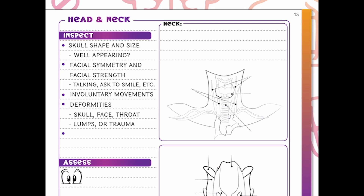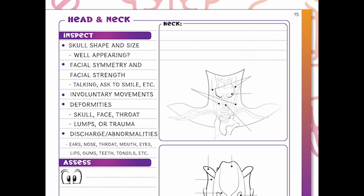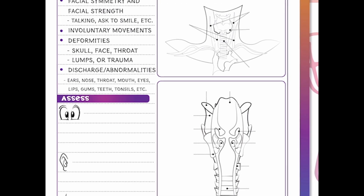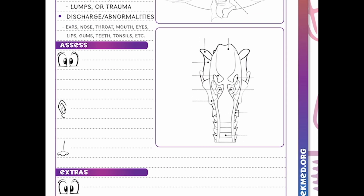Are there any lumps, any trauma present, any discharge or abnormalities? Do we see any bleeding from the nose or discharge out of the ears? Do we see any eye mucus or eye drainage? We're going to look for drainage all over — in our ears, nose, throat, mouth, eyes, lips, gums, teeth, and tonsils.